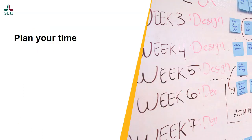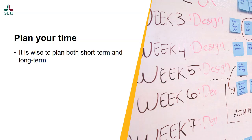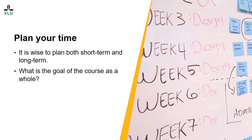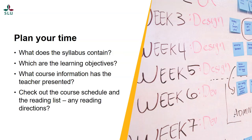Getting good at planning also means getting good at prioritizing. If you make plans for preparations, schedule time, free time and so on, you will get a better overview of how to prioritize your own time. It is wise to plan both short term and long term. What is the goal of the course as a whole and how are you going to get there? Every course has a syllabus — a document about the content, how the course is given, examination information, and what you're expected to learn. Always check out the course schedule before the course begins and keep it on hand. Before the examination, it's also wise to check out the learning objectives, since that is the content you will be tested on. These objectives will help you focus when studying. So: what does the syllabus contain? Which are the learning objectives? What course information has the teacher presented? Check out the course schedule and also the reading list — are there any reading directions, for example?